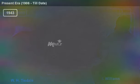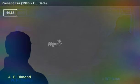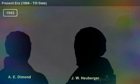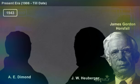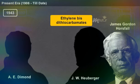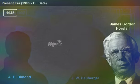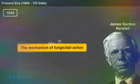In 1943, A. E. Diamond, J. W. Heuberger, and James Gordon Horsfall discovered ethylene-based dithiocarbamate fungicides. In 1945, Horsfall explored the mechanism of fungicidal action.